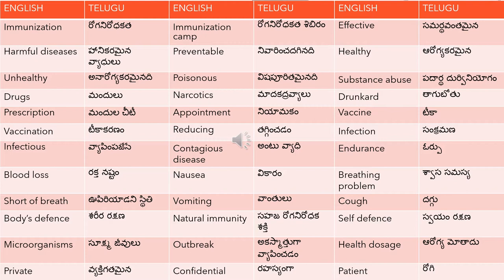Healthy is 'aarogya karamayanadi'. Similarly, unhealthy means 'anaarogya karamayanadi'. Next, poisonous is 'vishapuritamanadi'. Substance abuse is 'padartha durviniyogam'.